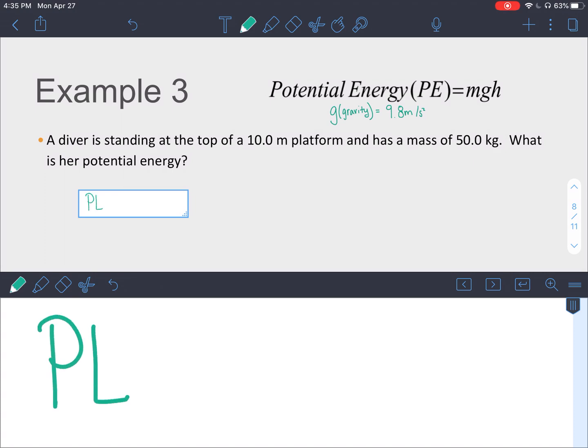So PE is equal to the mass, which is 50 kilograms, times the gravity,